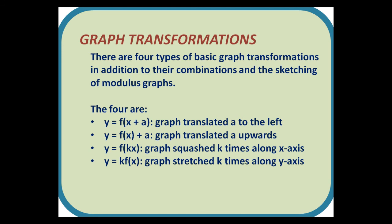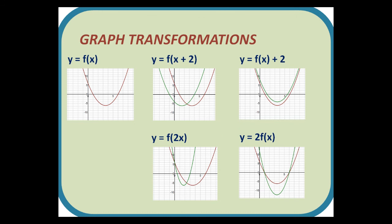There are four basic types of graph transformations, in addition to their combinations and the sketching of modulus graphs. These are: y = f(x + a), where the graph is translated a to the left (y = f(x − a) moves right); y = f(x) + a, where the graph is translated a upwards (y = f(x) − a moves downwards); y = f(kx), where the graph is squashed k times along the x-axis; and y = k·f(x), where the graph is stretched k times along the y-axis. We finish with examples of these transformations shown as sketches using the number 2 to translate and stretch.